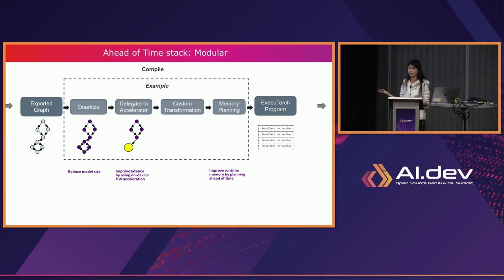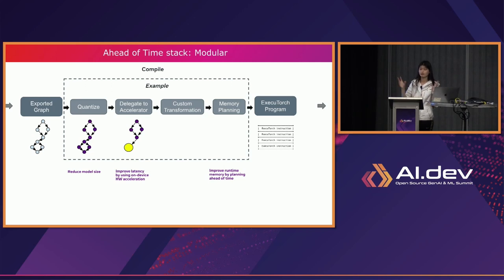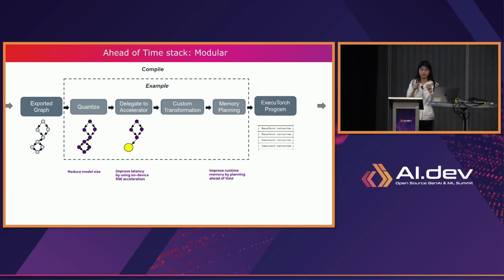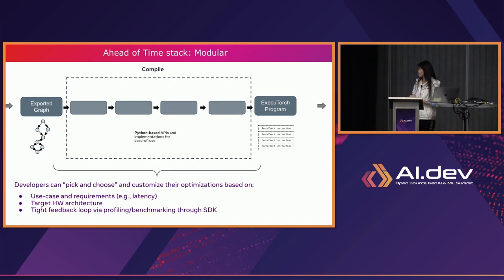Lastly, memory planning. During inference there can be many intermediate tensors, and we can plan memory ahead of time to save compute. For example, if we add two tensors and the result feeds into the next matrix multiply operator, those intermediate tensors can be freed and reused by other compute. With all these entry points, developers can pick and choose based on their use case, requirements, and target hardware architecture.